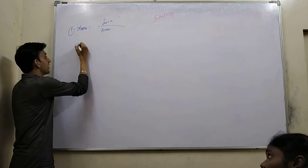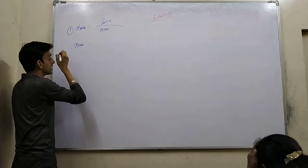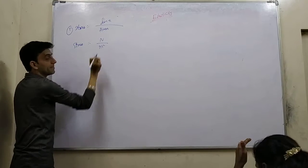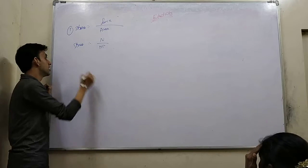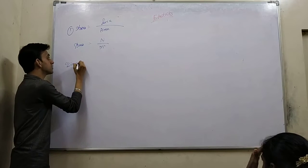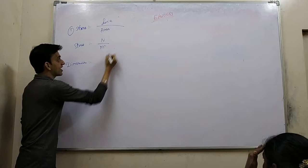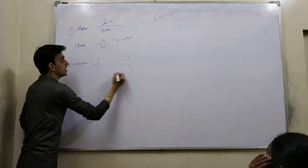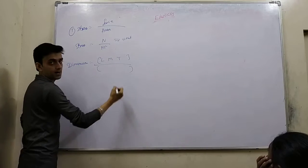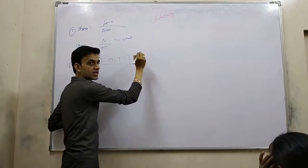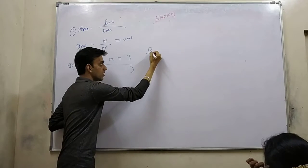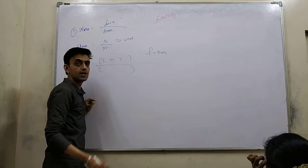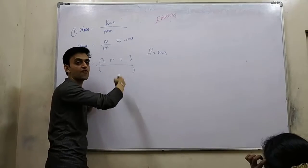So stress is given by force per unit area. This unit is Newton per meter square. If I want to know the dimension, this is your unit. What is Newton? Newton's formula is mass times acceleration. Because Newton discovered force.